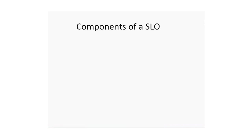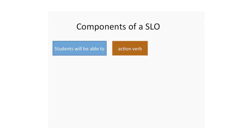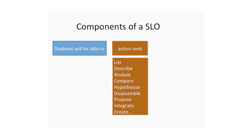Very often, there are three components of SLO. SLOs almost always start with the phrase 'students will be able to' or 'student can,' and then followed by an action verb. There are some examples like list, describe, analyze, and you can see more action verbs in a link I'm going to put in the more-to-consider section for you to access.